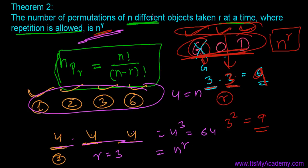So to summarize: the number of permutations of n different objects taken r at a time where repetition is allowed is n to the power r. Remember this formula — it will be very useful in further calculations.